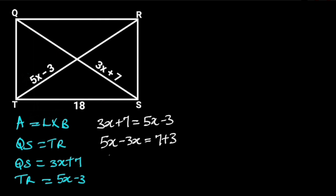5x minus 3x is equal to 2x, and 7 plus 3 is 10. Dividing both sides by 2 will give us x is equal to 5.